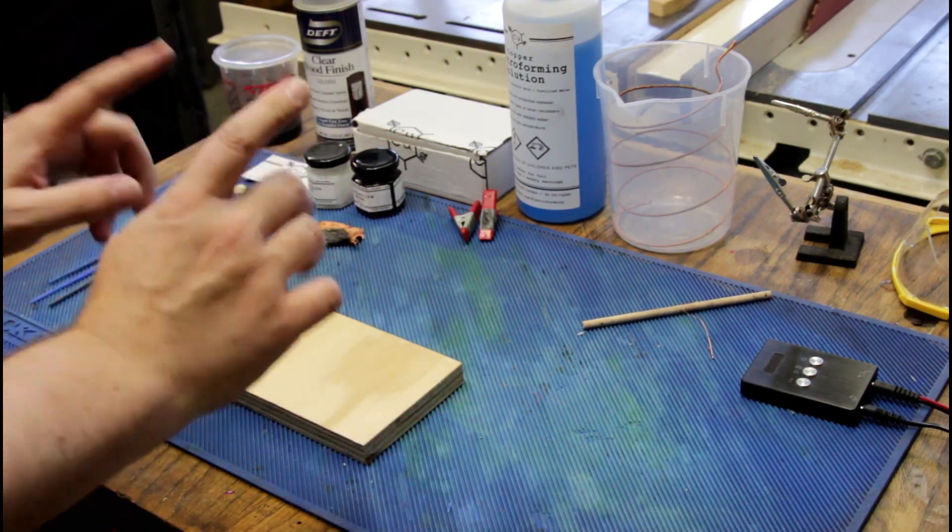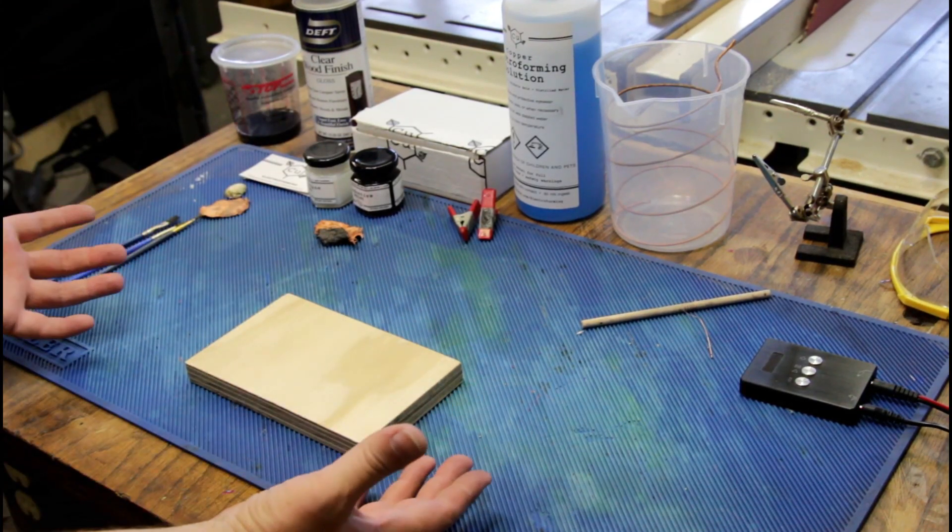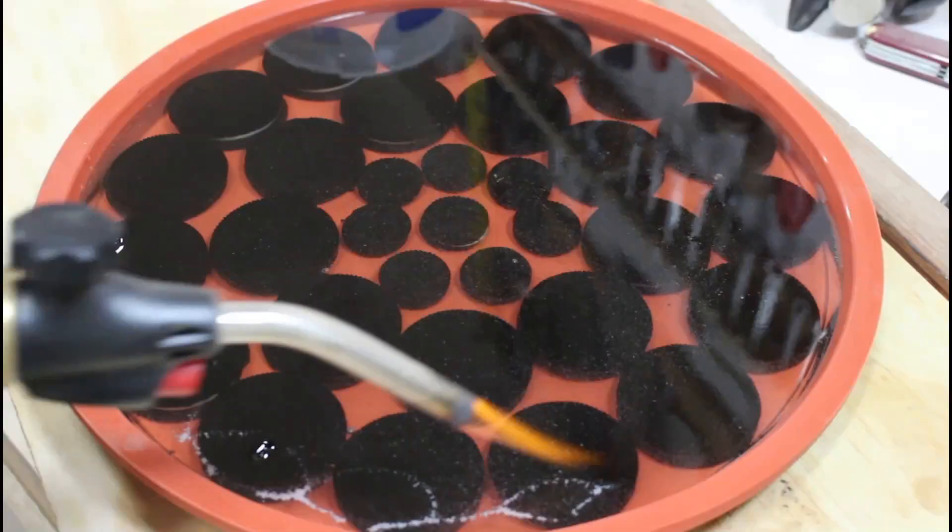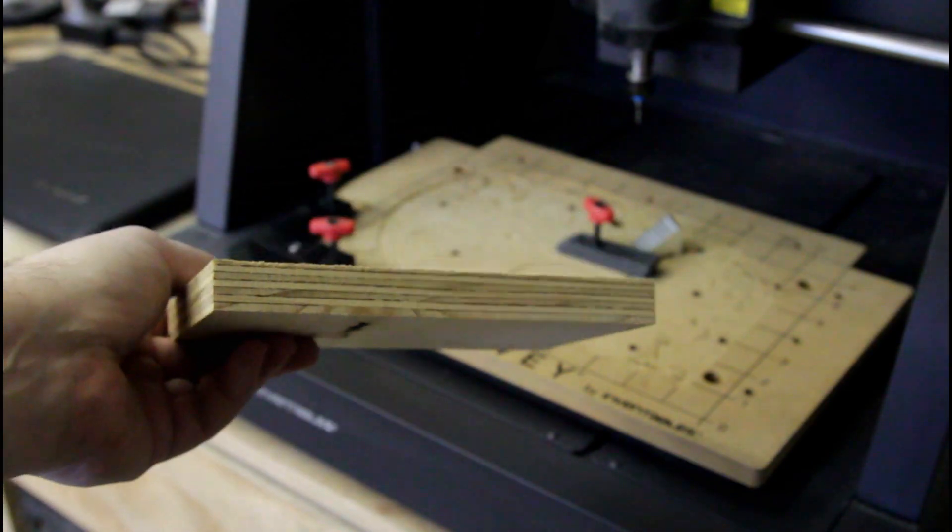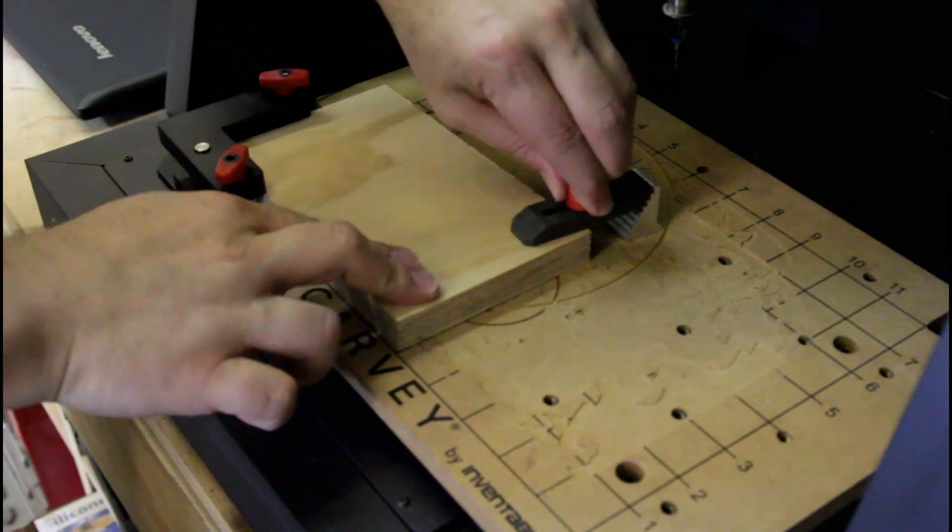Today we're going to be playing with wood and electricity. What could possibly go wrong? This is just a scrap piece of plywood I've had lying around the shop. It's pine plywood, three-quarters of an inch thick. There we go.